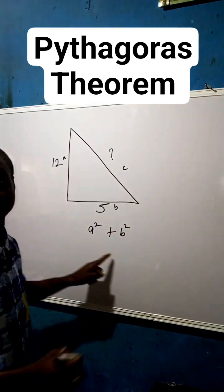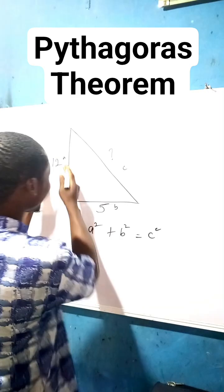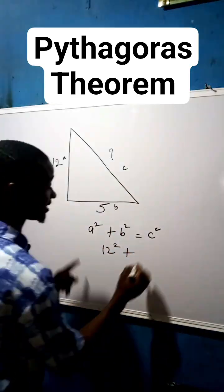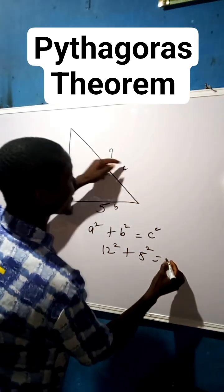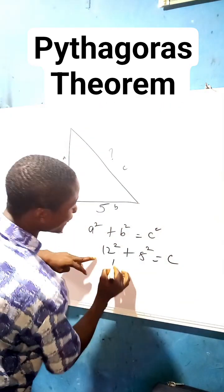A square plus b square equals to c square, right? Now our a square is 12, 12 square, plus our b is 5 square equals to our c. You don't have it. So 12 square is 144 plus 5 square is 25 equals to c.